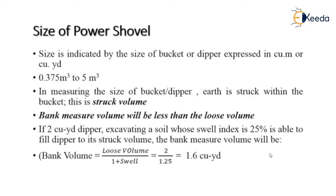Here is an example: a 2 cubic yard dipper excavating soil with a swell index of 25% fills the dipper to its struck volume. Find the bank measure volume. Bank measure volume equals loose volume divided by (1 + swell index). So 2 divided by 1.25 equals 1.6 cubic yards.